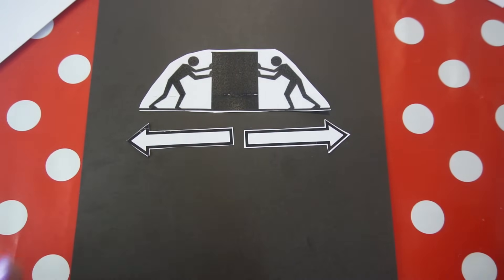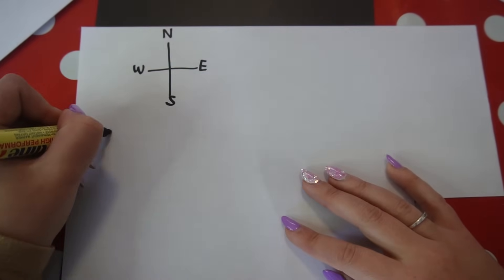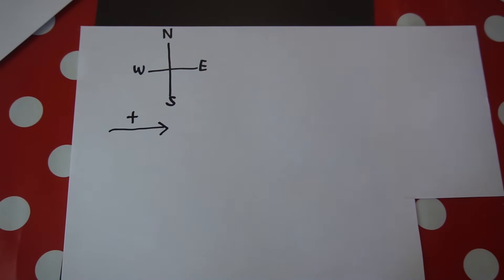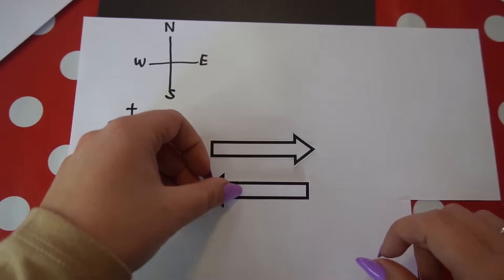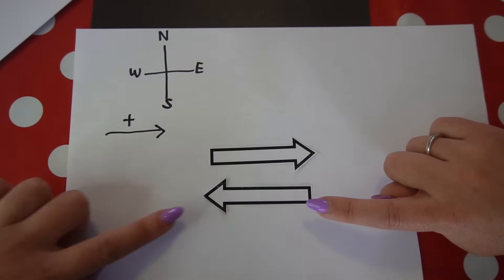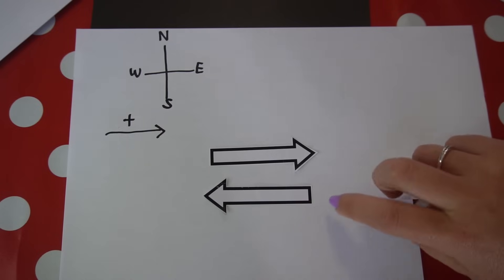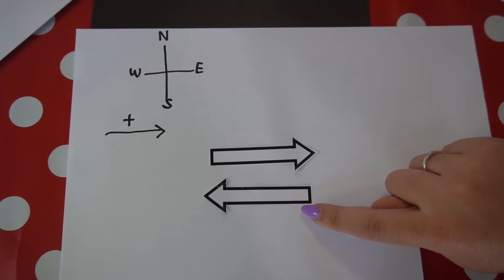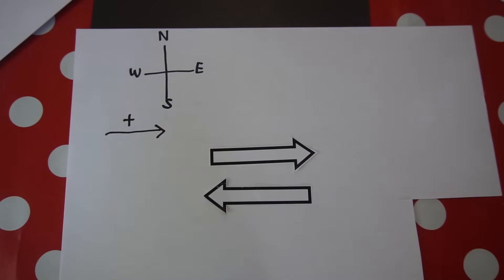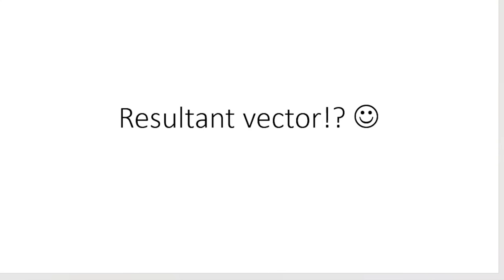We will discuss net vectors in the next video. For now, remember that arrows graphically represent vectors. If to the east or to the right is defined as the positive direction, a vector pointing right is a positive vector and a vector pointing left is a negative vector — even if both have the same magnitude, say five newtons. The negative vector simply acts in the opposite direction.